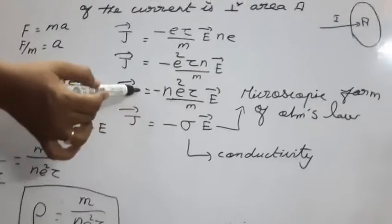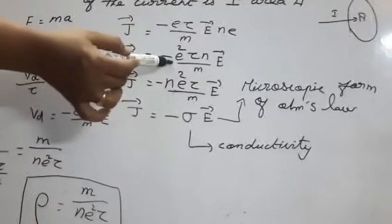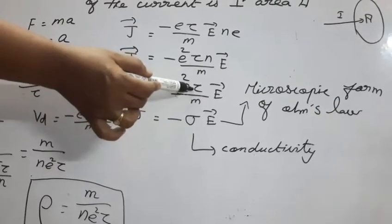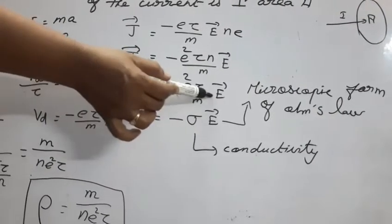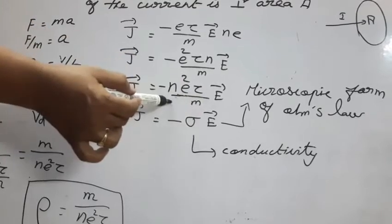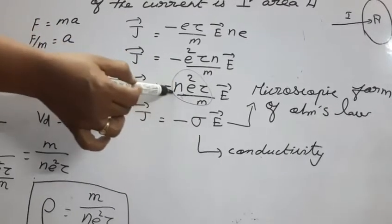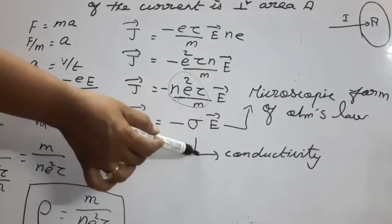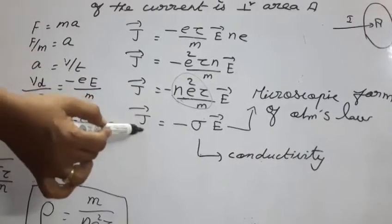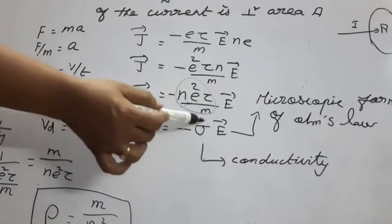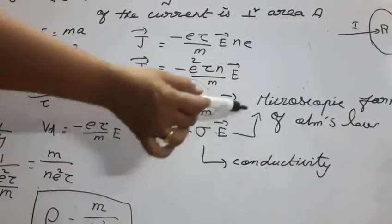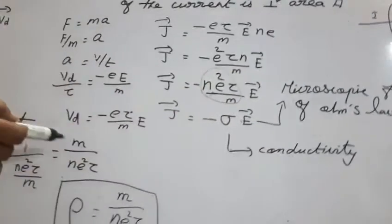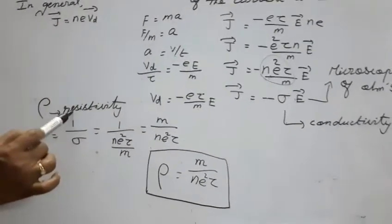Grouping terms, J⃗ = −(ne²τ/m) · E⃗. Here, ne²τ/m is written as σ, where σ is known as conductivity. Therefore J⃗ = σE⃗ (taking the negative into the direction convention). This is known as the microscopic form of Ohm's law.